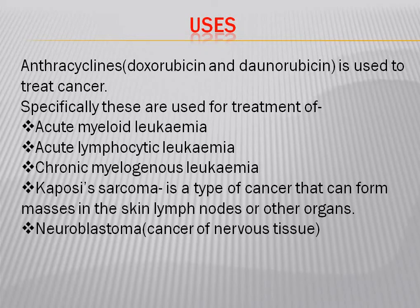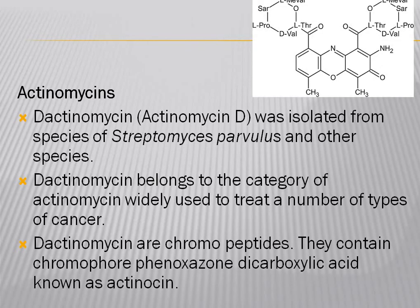Anthracycline antibiotics such as doxorubicin and daunorubicin are used to treat several cancers, specifically acute myeloid leukemia, acute lymphocytic leukemia, chronic myelogenous leukemia, Kaposi's sarcoma (a cancer that can form masses in the skin, lymph nodes, and other organs), and neuroblastoma, which is a cancer of nervous tissue.